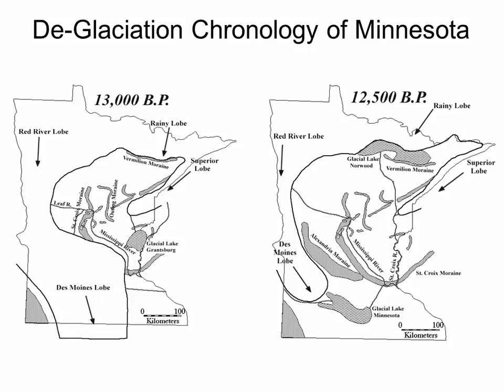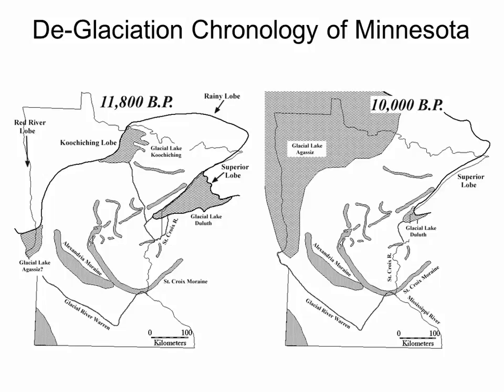About 13,000 years ago the Des Moines lobe hit a maximum — it's called the Des Moines lobe because the terminus was actually right near Des Moines, Iowa. It went all the way down into Iowa. As the climate started warming and the Des Moines lobe started retreating, it went from Des Moines to southern Minnesota in about 500 years. And right here at Browns Valley, Minnesota, there's a continental divide. Once the Des Moines lobe got there, all the water coming off that glacier got trapped.